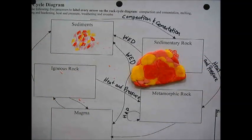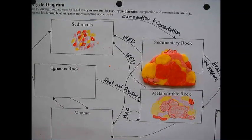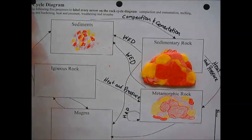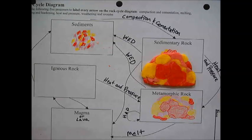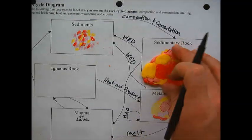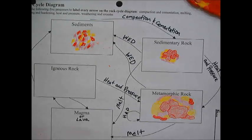Now that I have my metamorphic rock, I'm going to sketch it out in the metamorphic rock box. We have one last type of rock to create — an igneous rock. Before we can make an igneous rock, it has to go through the melting process, turning into magma or lava. The metamorphic rock or the sedimentary rock can melt to form the magma or lava needed to create our igneous rock.